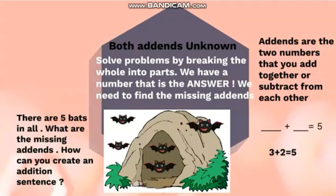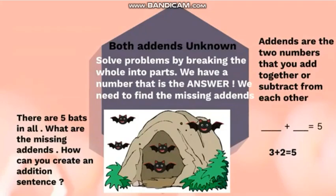To solve these problems, I need to break the whole into parts. I know the whole number of bats, so I break it into parts — which are three and two in this example. It's like a reverse addition sentence: the answer, which is the sum, is given to us as five, but we need to find the missing addends — the two numbers that I add together to make five.